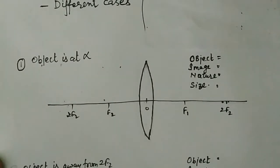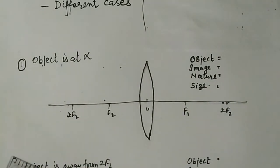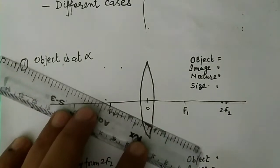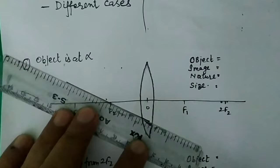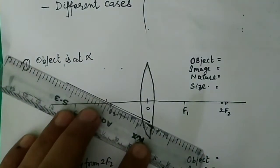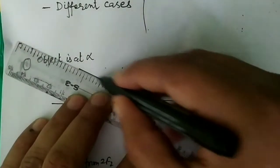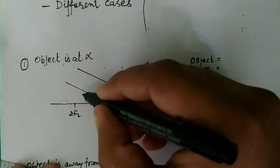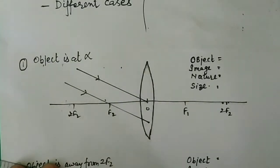The first case is when the object is at infinity. When the object is at infinity, it means parallel rays of light. I will draw two parallel rays whose rules are known to us. The first ray I will make pass through F2, and the second ray passes through the optical center. So these are the two parallel rays, meaning the object is at infinity.